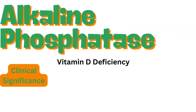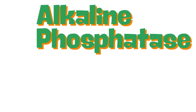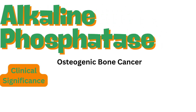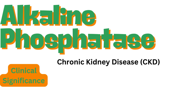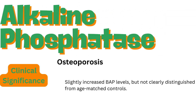Vitamin D deficiency: BAP levels are 2 to 4 times the upper reference limit and decrease slowly with treatment. Hyperparathyroidism results in slight to moderate increases in BAP, indicating the presence and extent of skeletal involvement. Osteogenic bone cancer: very high BAP levels can indicate bone metastasis in 70% of prostate cancer cases. Chronic kidney disease (CKD): KDIGO guidelines recommend measuring total ALP along with serum calcium, phosphate, and PTH in adults with a GFR less than 45 mL per min per 1.73 m². Osteoporosis: slightly increased BAP levels, but not clearly distinguished from age-matched controls.